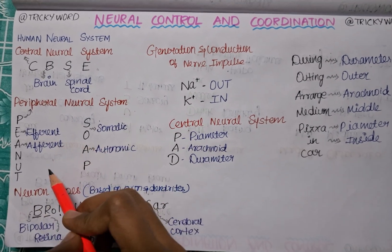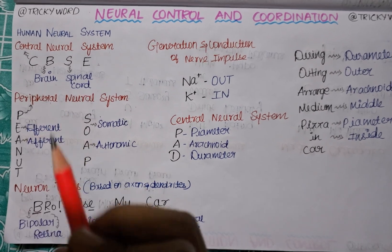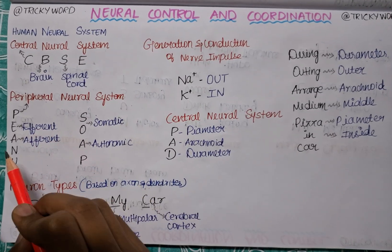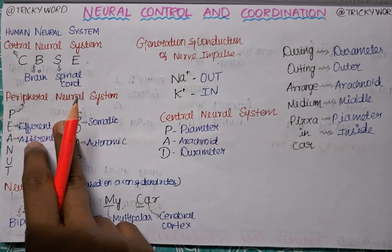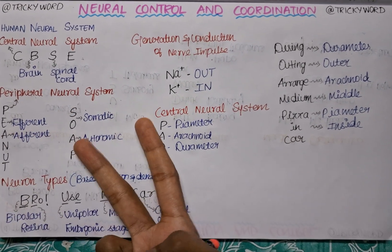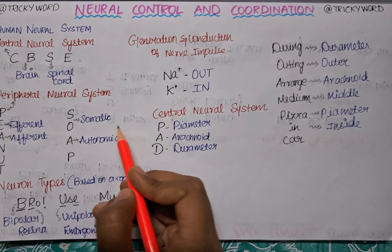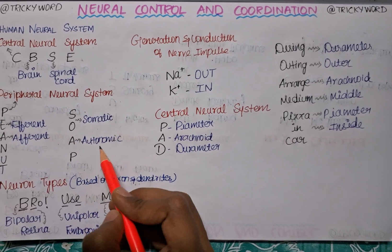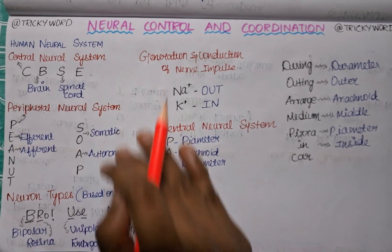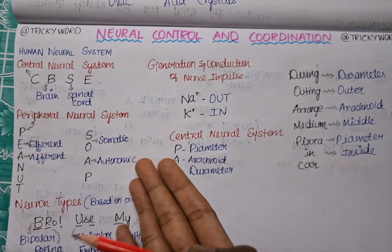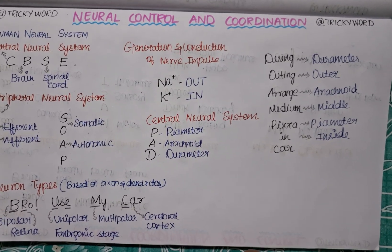For the peripheral neural system, the first trick is PEANUT — P is for peripheral neural system, E is for efferent neurons, and A is for afferent neurons. The peripheral neural system can further be divided into two types, and the trick for that is SOAP — SO for somatic and A for autonomic peripheral neural system.